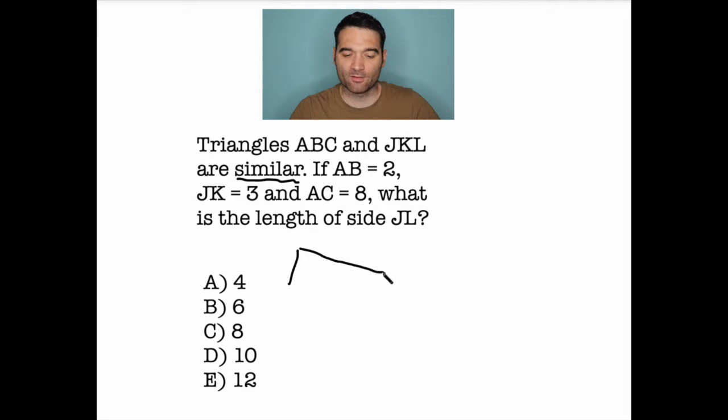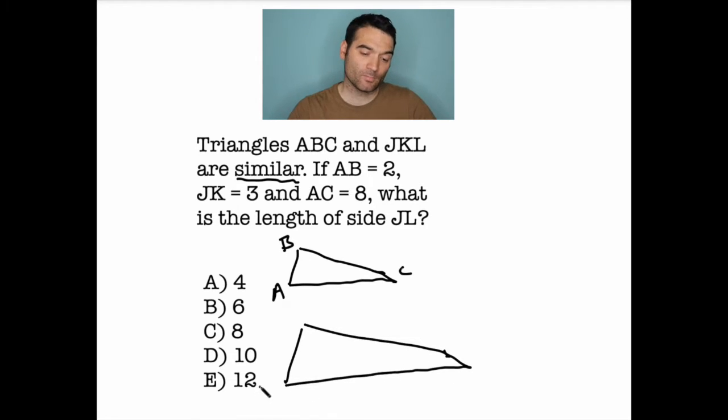So if I draw one triangle, ABC, like that, boom, there's A, B, and C, and I have this other triangle, JKL, what I'm saying is,